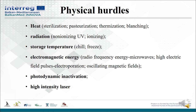When using processes intended to kill microorganisms, it is necessary to protect food products after processing against microbial recontamination. Under the heading of physical hurdles are included techniques like heat — which includes sterilization, pasteurization, thermization, and bleaching — radiation, including non-ionizing radiation, UV, and ionization; storage temperature, for the cases of chilling and freezing; and electromagnetic energy, including radio frequency energy, microwaves, high electric field pulses, electroporation, oscillating magnetic fields, photodynamic inactivation, and high intensity laser.